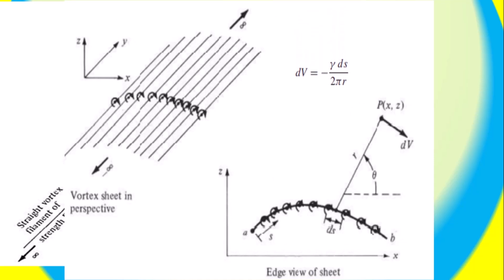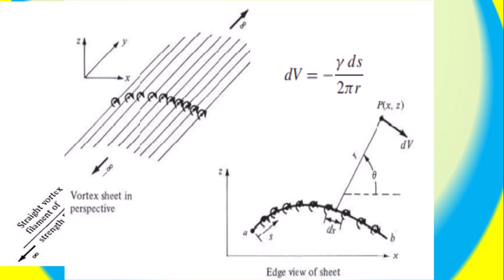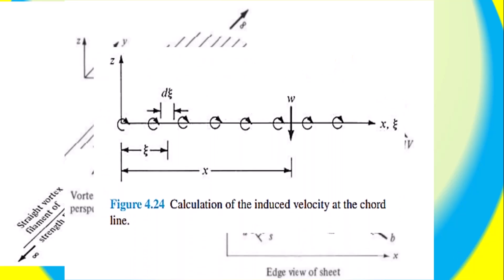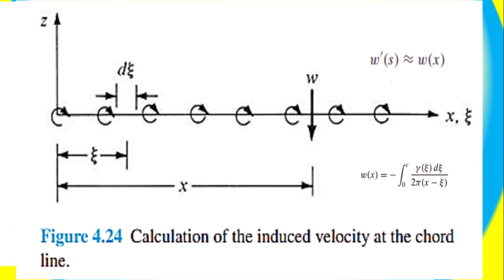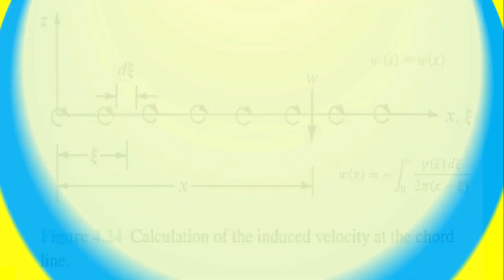This formula also accounts for the downward velocity field at a specific point, known as point P, and the induced velocity along a chord line. The strength of a vortex filament is determined by the circulation of the fluid around a closed loop, and the number of vortex filaments that make up a vortex sheet can vary depending on the specific flow conditions. The downward velocity field at point P is a key factor in understanding the overall flow dynamics, and the induced velocity along a chord line is an important measurement for understanding the total induced velocity within the vortex sheet.